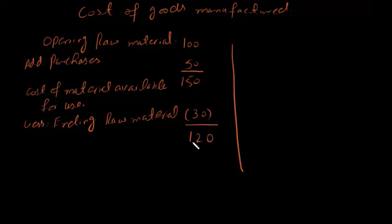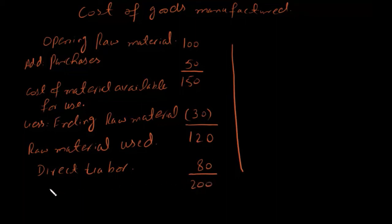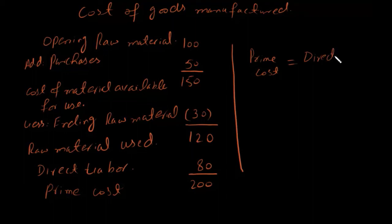This amount of 120 we call Raw Material Used. Then we add Direct Labour — let's say Direct Labour is 80. The total comes to 200. This total we call Prime Cost. Prime Cost equals Direct Material plus Direct Labour.